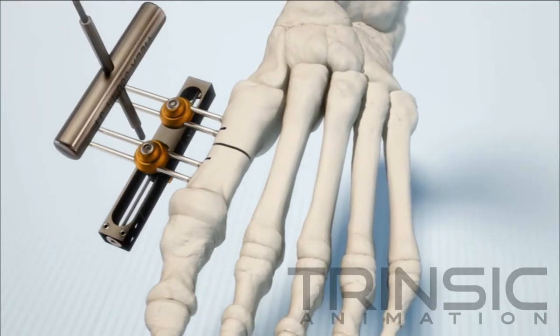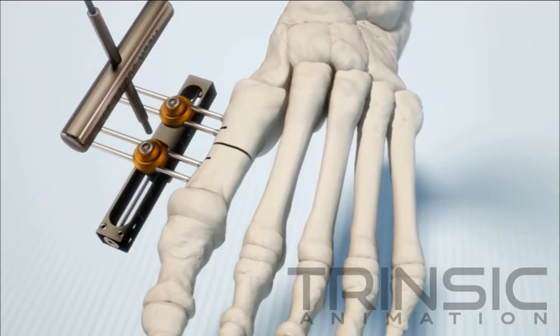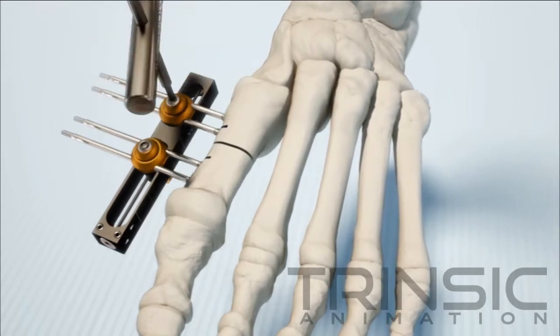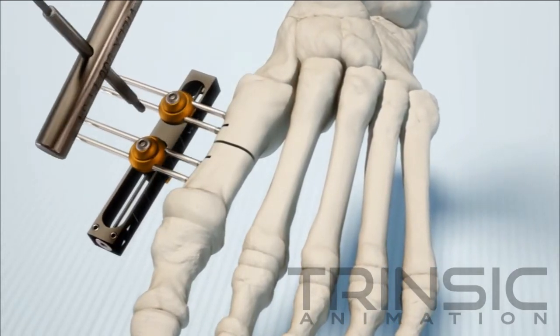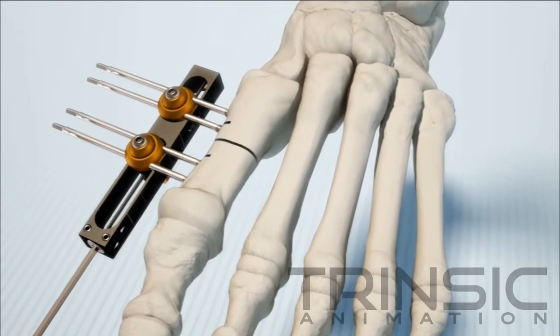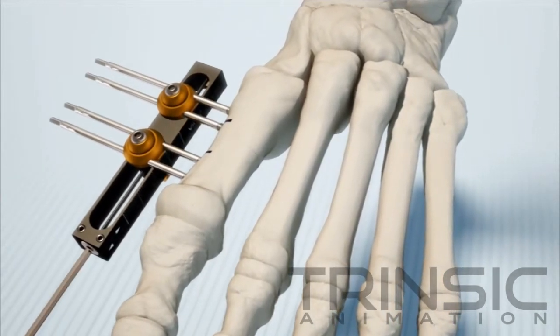With the orientation established, hold the position while an assistant locks the half pin's carriages. Use an Allen wrench, distract and re-close the osteotomy and watch how the bone surfaces compress toward each other.